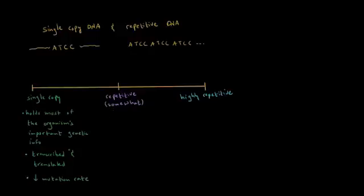So since the important genes are single-copy DNA, single-copy DNA is transcribed and translated, and it has a low mutation rate, which is a good thing, because of course we don't want there to be mutations in the important genes.